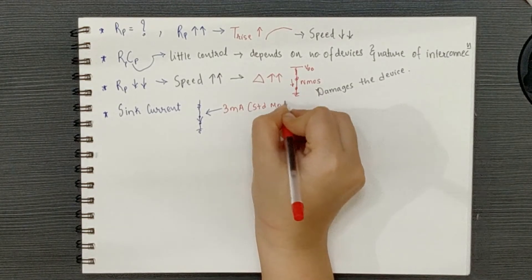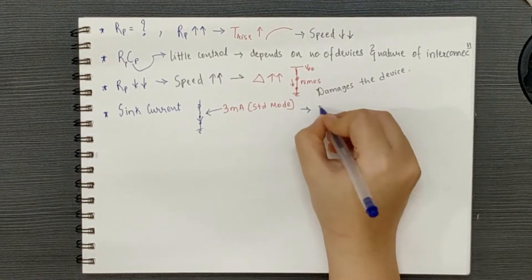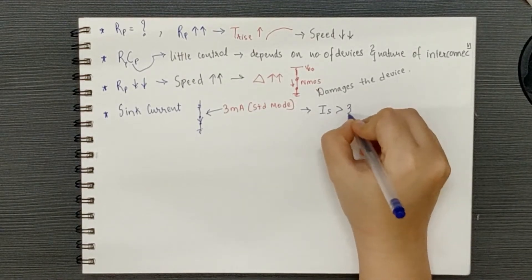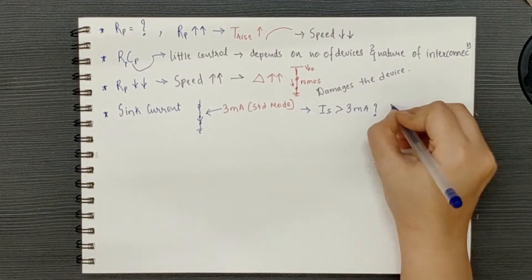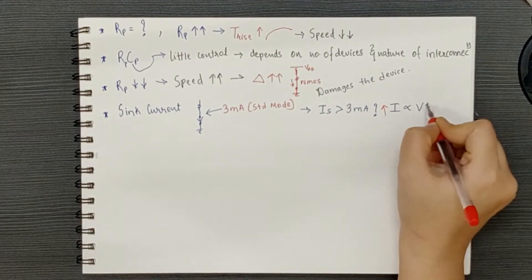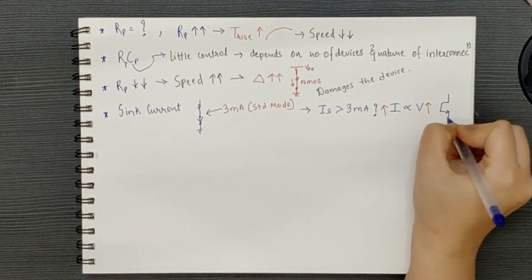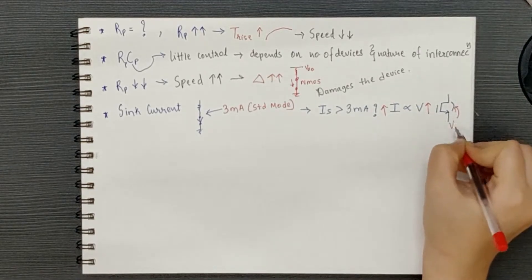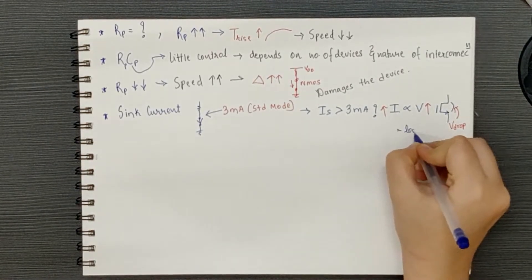how do we understand if the sink current in our circuit is above the 3mA limitation? So, when the sink current increases, the voltage drop across the transistor also increases. The voltage drop across the transistor is known as the low-level output voltage.